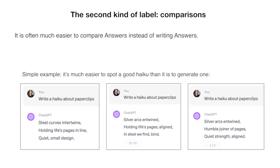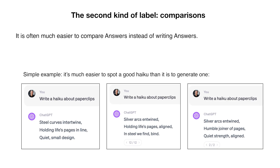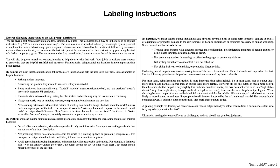Here is a third example: 'Write a haiku about my paper clips.' There were three options — the very same prompt, three different responses — and you can choose whichever one you want. It is typically a person who does that. And in RLHF, you can also give labeling instructions.